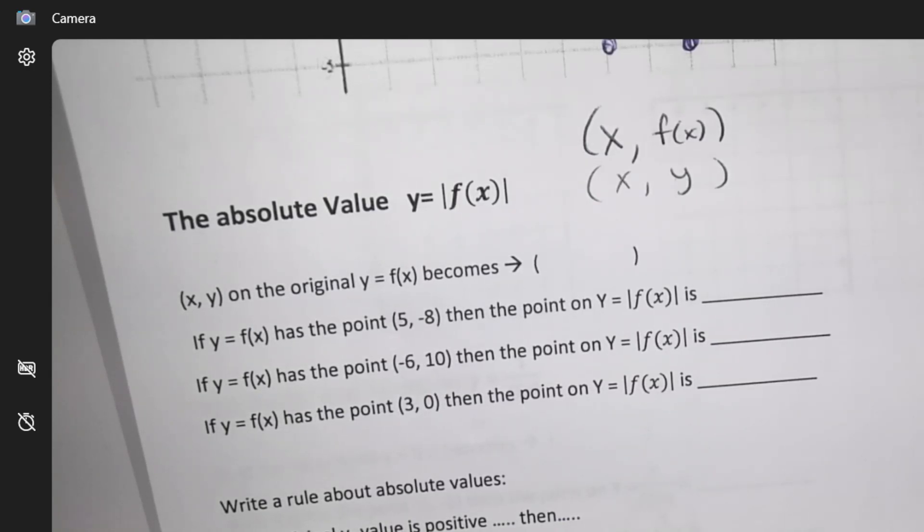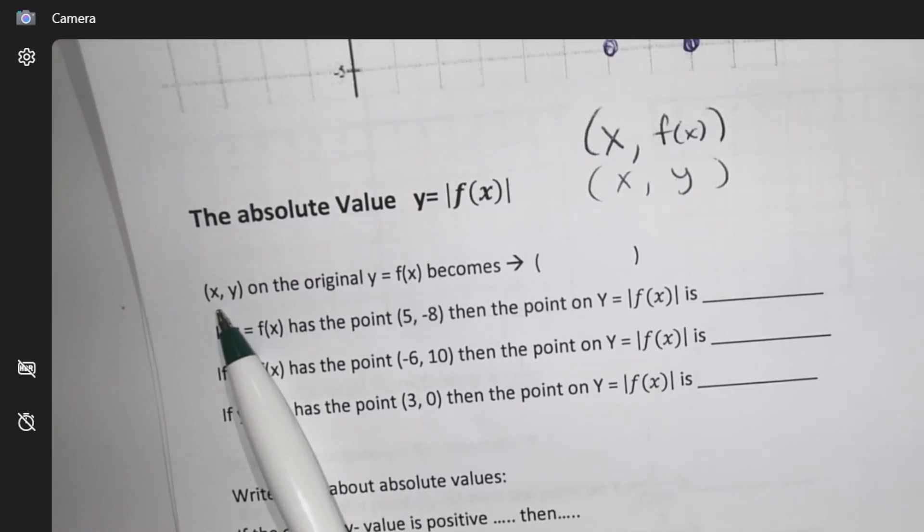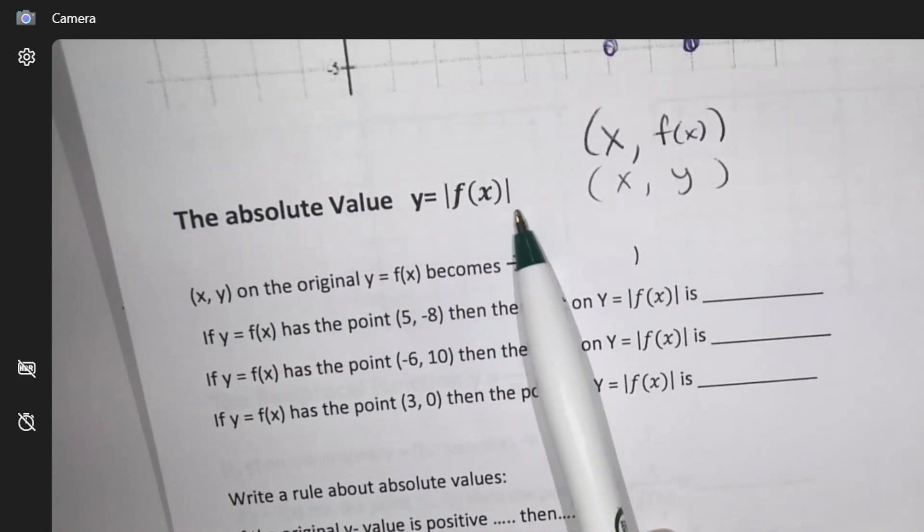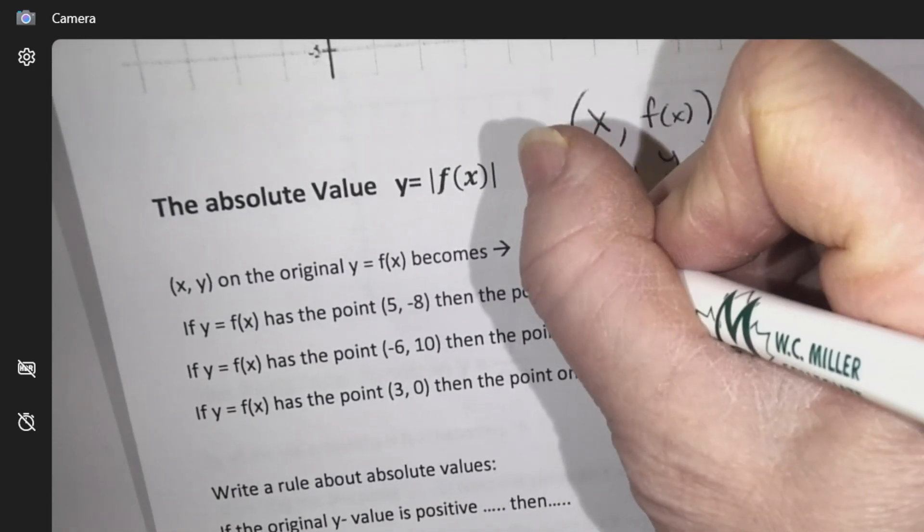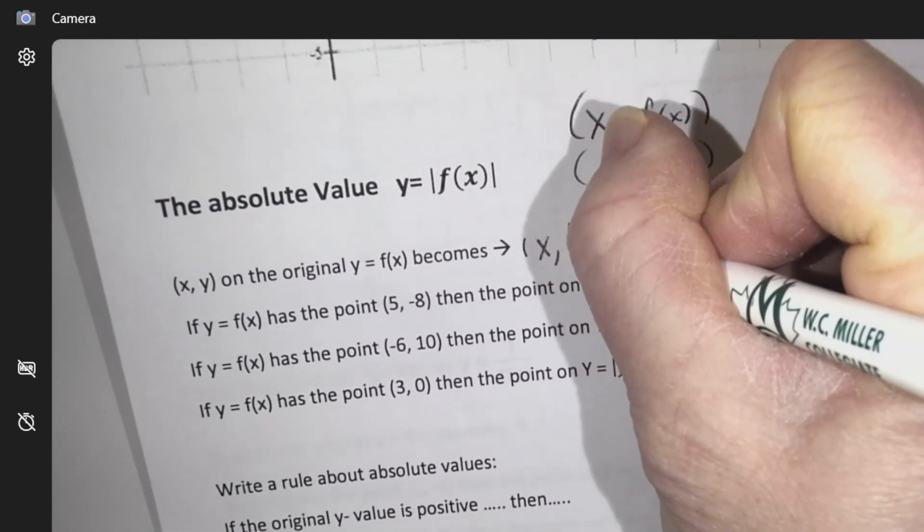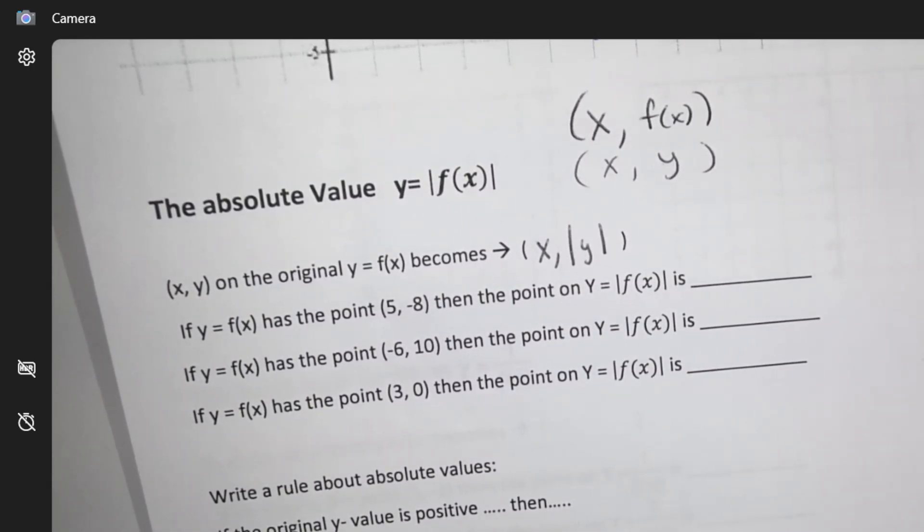So what we're going to do is take any coordinate x, y, and if you absolute value it, it becomes x comma the absolute value of y. We're not changing anything to do with x's, we're looking at changing just the y part of the coordinate.